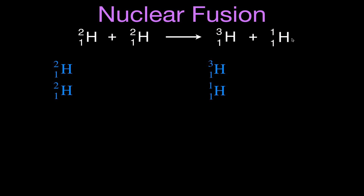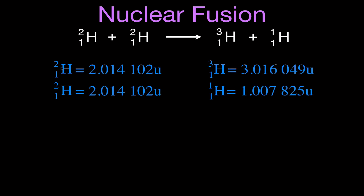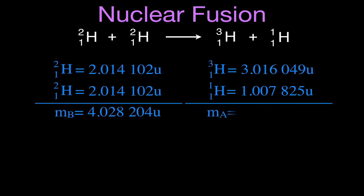We look up the mass of those atoms — usually given including the electrons. You can find these values on the internet, in a textbook appendix, and so on. The mass of hydrogen-2 is 2.014102 unified atomic mass units. The mass of hydrogen-3 and of hydrogen-1 are looked up similarly, each including one electron. Values may differ slightly depending on rounding. Adding up the masses on the left-hand side gives 4.028204 unified atomic mass units.